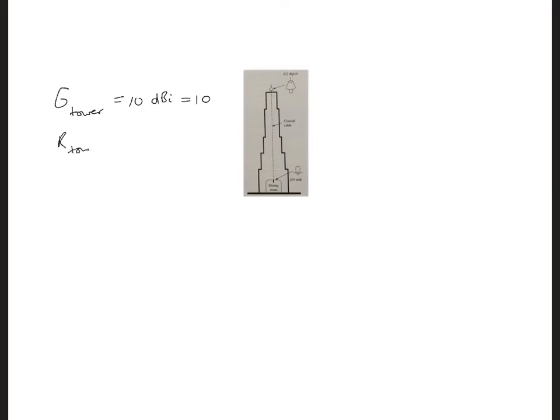R from the tower to the building is 1,200 meters. That's a radial distance from the tower to the building. And then we also know R, the stub to the phone, down here in the dining room, is 10 meters.